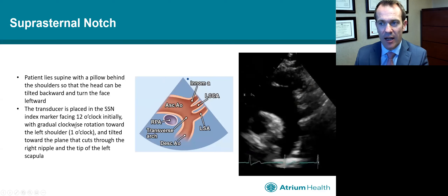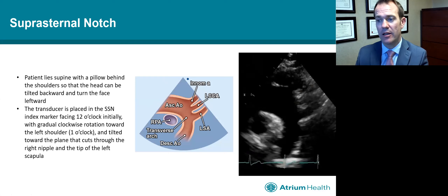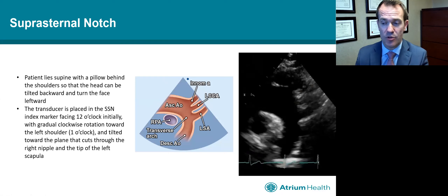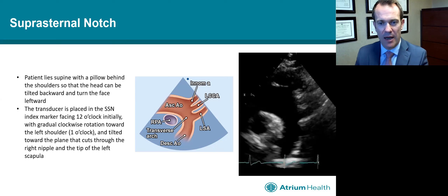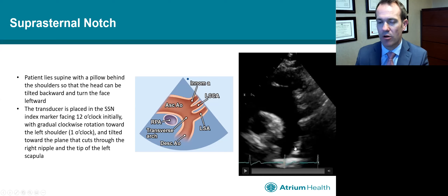The final view in a standard echo is the suprasternal notch. The patient lies supine with a pillow behind their shoulders and usually turns their face leftward. The transducer is placed into the suprasternal notch facing at about 12 o'clock initially, then gradually rotating to about one o'clock and tilting toward a plane that cuts through the right nipple and the left scapula, to get a beautiful view of the aortic arch.